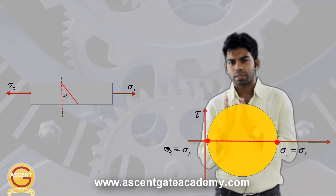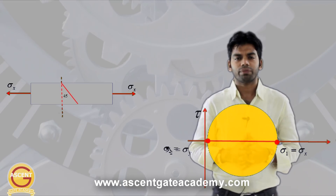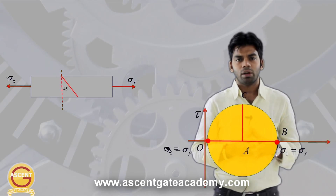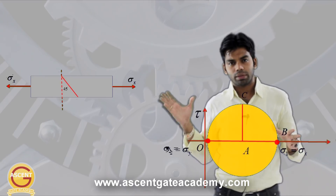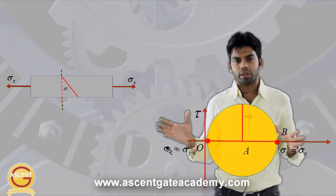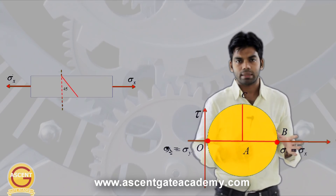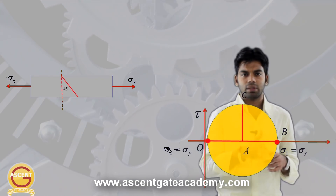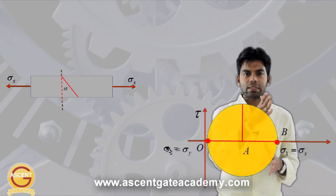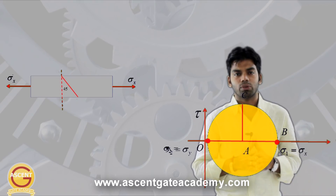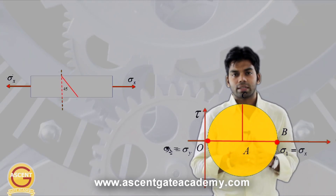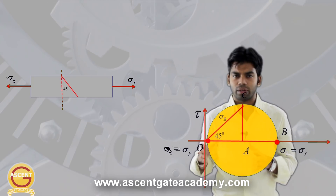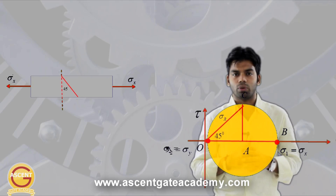We have to determine the resultant stress at a plane 45 degrees to the vertical. This vertical plane is our reference plane AB on the Mohr circle. Because in the original figure the plane is at 45 degrees, in the Mohr circle it is taken as twice that angle, meaning 90 degrees. At 90 degrees we locate plane AC, which is our required plane, and we must determine the resultant stress at this plane. To do so, we join this point to the origin, and OC is nothing but the resultant stress.